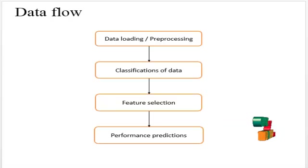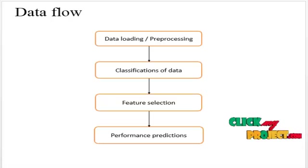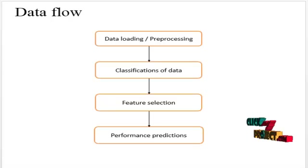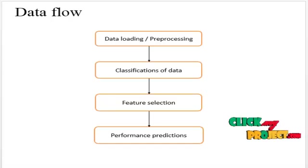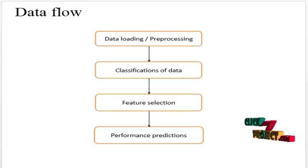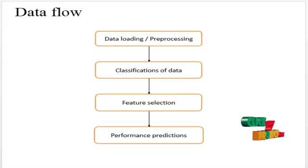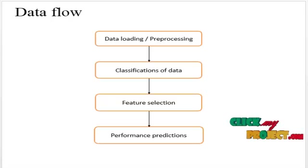Then we move into classification of data. In this step, we use C5.0 classification to differentiate student data loaded into the server. Next is feature selection, where we select data as per the user's selection criteria. From the feature selection results, we establish performance prediction results for students. The entire result of the application is obtained through this performance prediction.